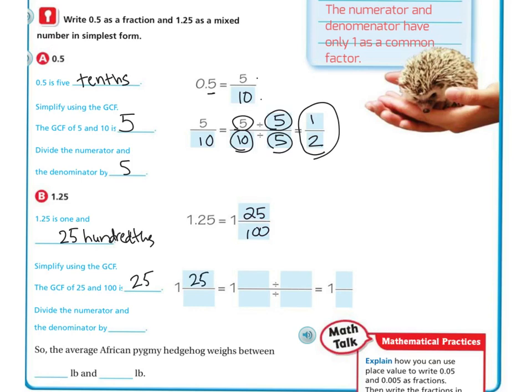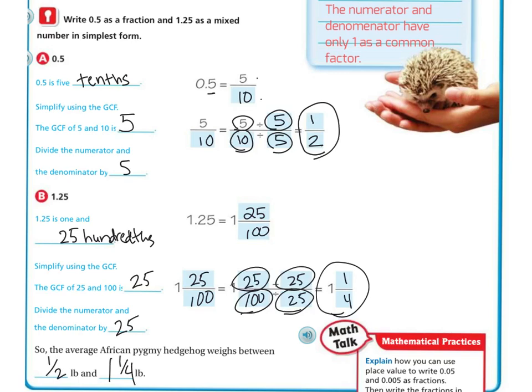So we're going to have 1 in 25 hundredths, and whatever you do to the numerator and the denominator, you have to do the same. So we have 1 in 25 hundredths. If we're going to try and make it in the simplest form, I'm dividing the top and the bottom by 25. When I divide 25 by 25, I get 1. When I divide 25 into 100, I get 4. So 1 in 1 fourth. So that means it was between a half a pound and 1 in 1 fourth pound.